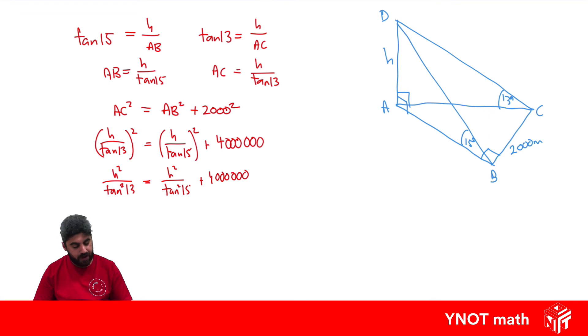Now we just need to solve for H. Let's bring our H's together. We'll get H squared over tan squared 13 minus H squared over tan squared 15 equals 4 million by moving this fraction to this side.